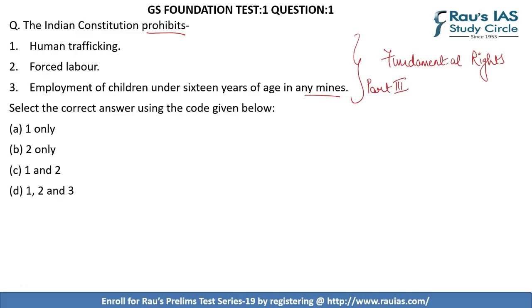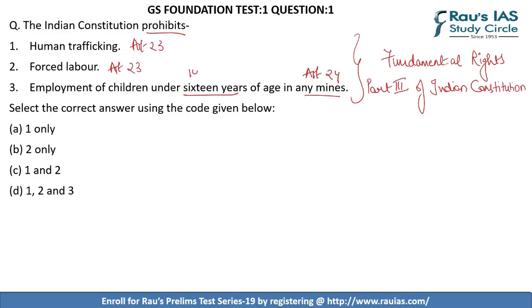Human trafficking is covered under Article 23. Similarly, forced labor also forms a part of Article 23. Employment of children in any hazardous situations is covered under Article 24. However, the age mentioned is 14 years, not 16. Article 23 and 24 come under the Right Against Exploitation.